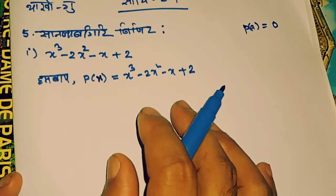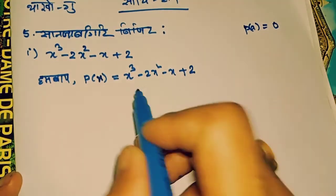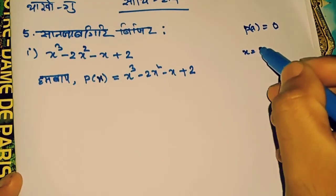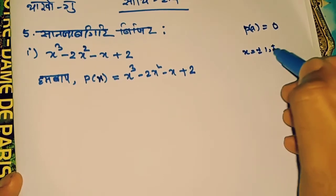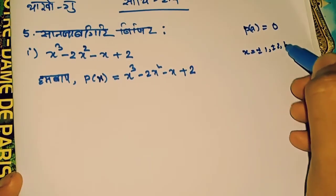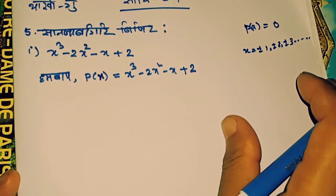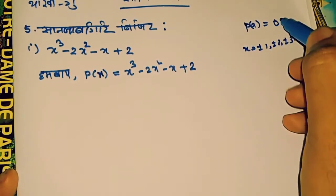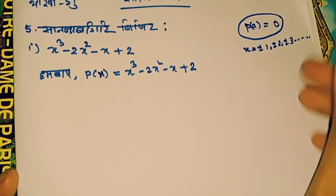Again, the polynomial P of x is equal to x, plus or minus 1, plus or minus 2, plus or minus 3, and so on. And x is equal to 0.